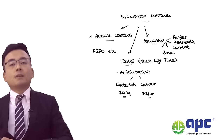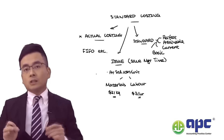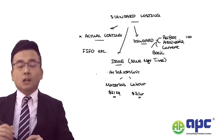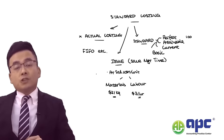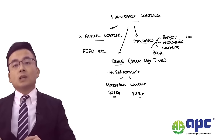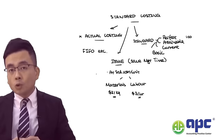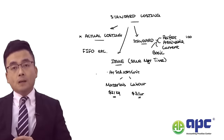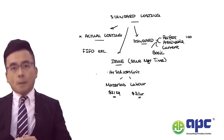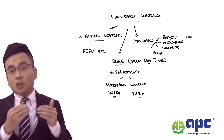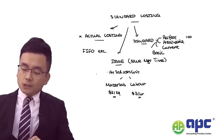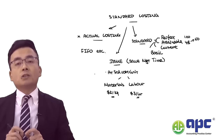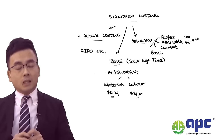To illustrate: if you're sitting the ACCA exam, 100 marks would be the perfect standard. If a student has sat the PM paper before and got 48 marks, I might motivate that student to get two more marks to reach the passing mark of 50. That improvement from 48 to 50 — where I reward you for the increase — would be the attainable standard.